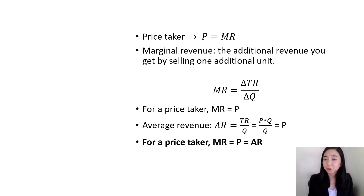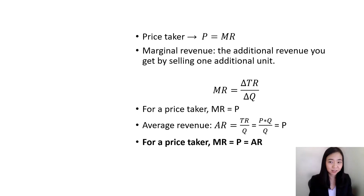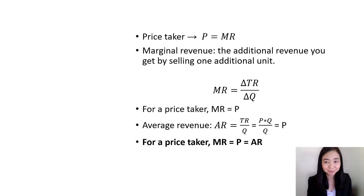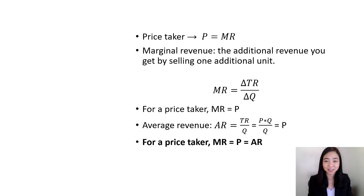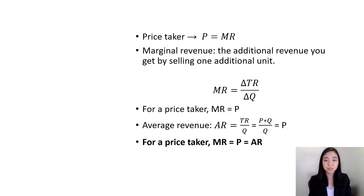At the same time, average revenue is equal to total revenue divided by quantity. But total revenue is also equal to price times quantity. So price times quantity divided by quantity is exactly price. Therefore, for a price taker, marginal revenue is equal to price, which is also equal to average revenue.